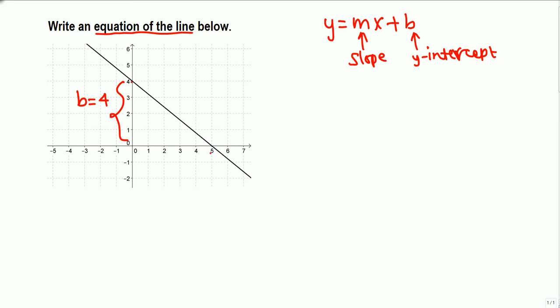Slope means rise over run. If we consider this point and this point, to get to the second point we have to go down 4 units. In fact, this is fall, or we can say negative 4 rise. This is rise and this is run. Run is 5.